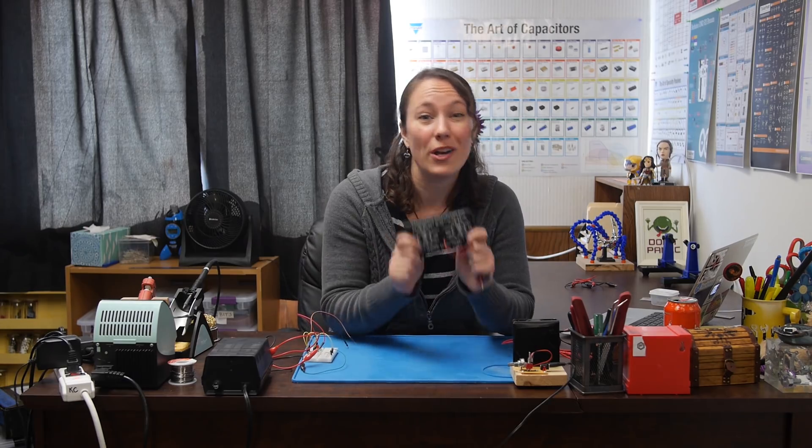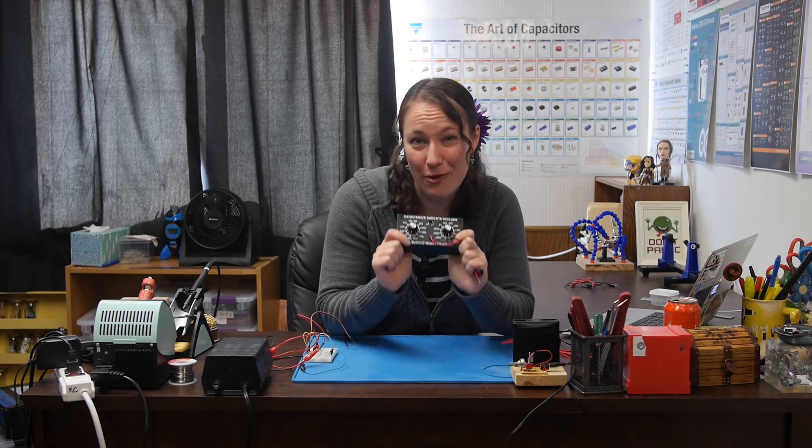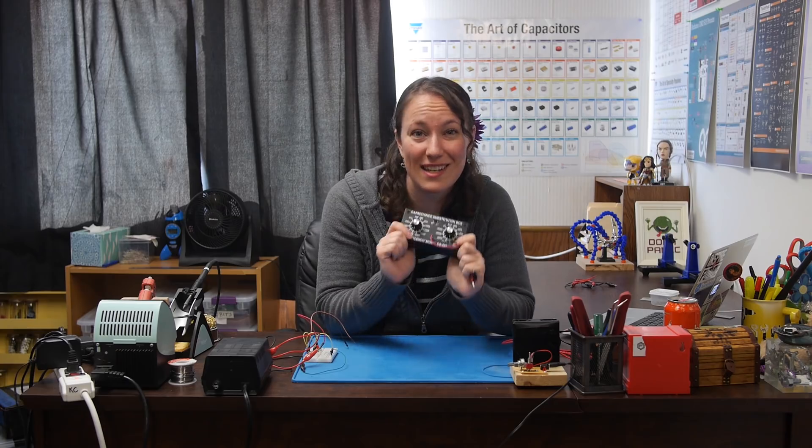Now the capacitors in the capacitance substitution box are all fairly small values. If I had some capacitors on hand that were, say, a thousand microfarads or 10,000 microfarads, the LED would have actually stayed on longer being powered by the capacitor. So what uses do you think you can find for the capacitance substitution box? Tell us about them on the element 14 community on element14.com forward slash the learning circuit. Happy learning.